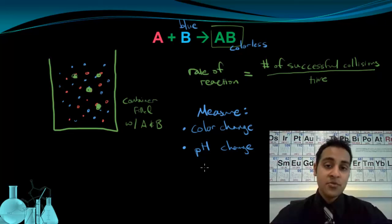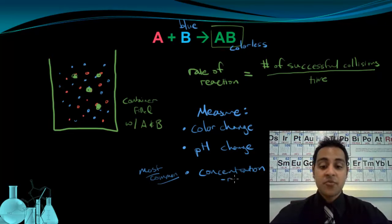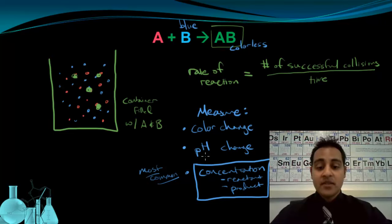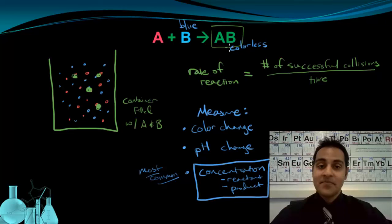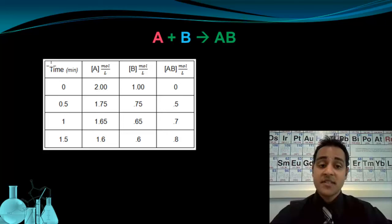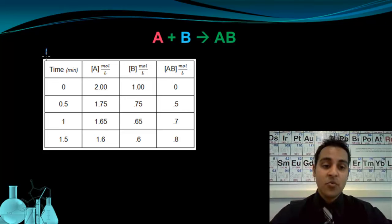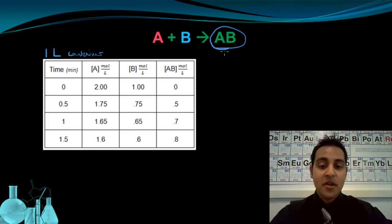The most common measurement we actually end up using is concentration — either the concentration of the reactant or the concentration of the product. Let's take a closer look at how to use concentration data to find the rate of reaction for the reaction A + B → AB. In this data table, time goes from 0 to a minute and a half, and we're given the concentration of A, the concentration of B, and the concentration of AB in moles per liter. We're going to pretend the container was one liter, so we can treat all these numbers as just moles. If I want to measure the rate in terms of how much product is formed over time, the rate is going to equal the change in concentration of AB divided by the change in time.